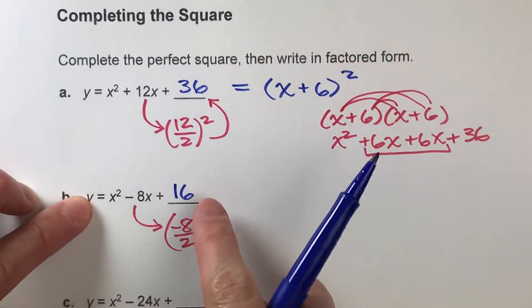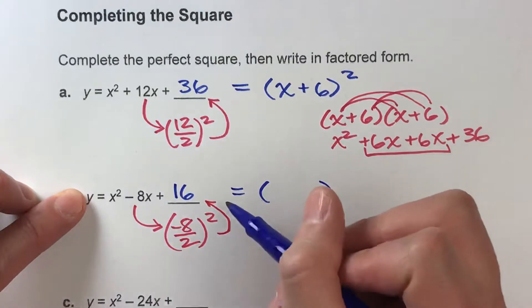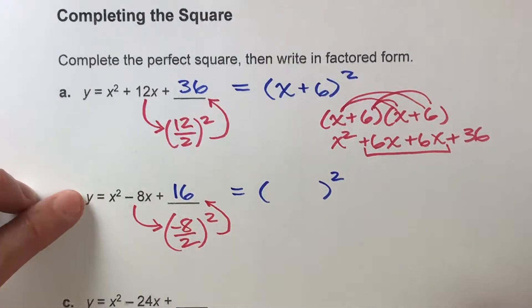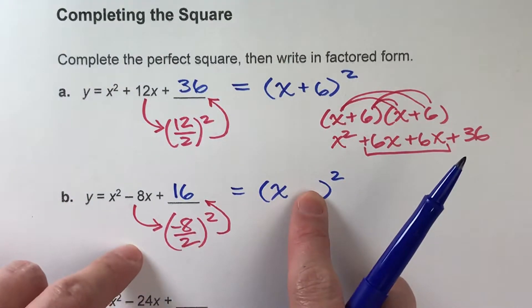Alright, so now we have a perfect square. To get it in factored form, we will figure out what it is that makes this a perfect square. So I always stick x there. Now, what's the number that goes on the end?